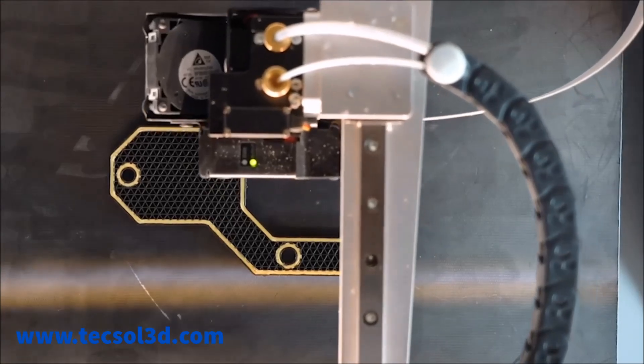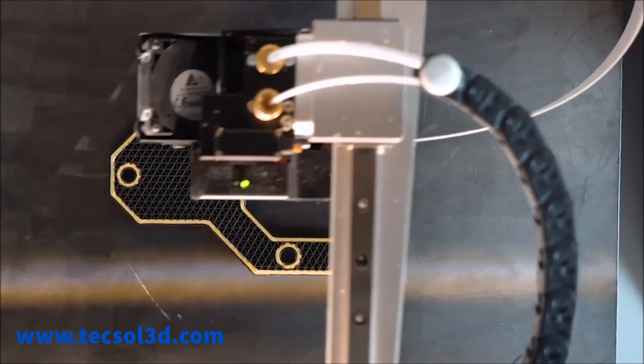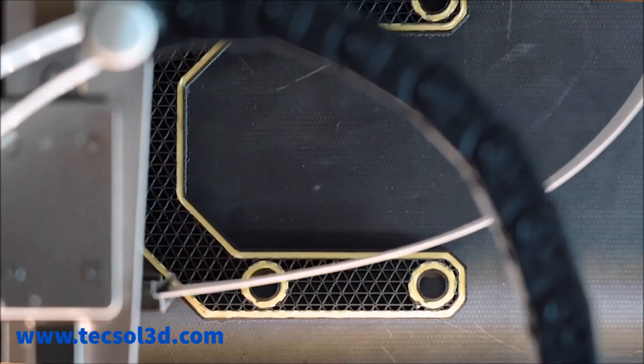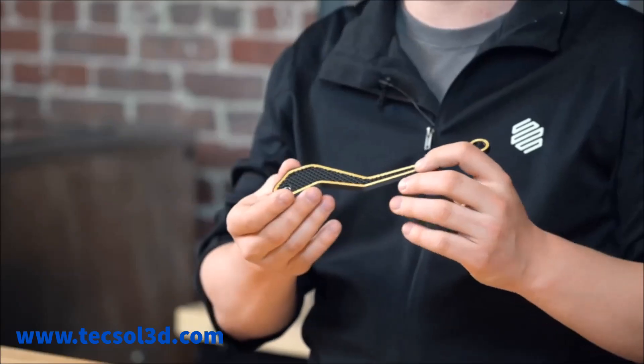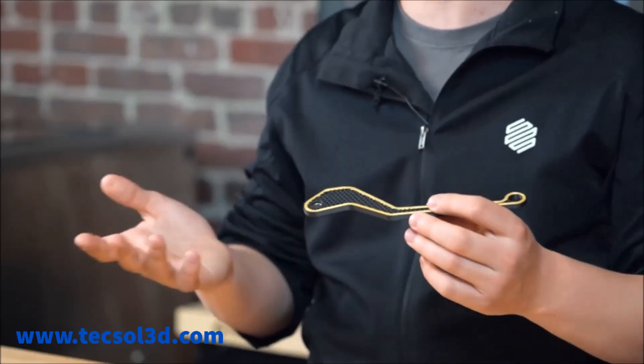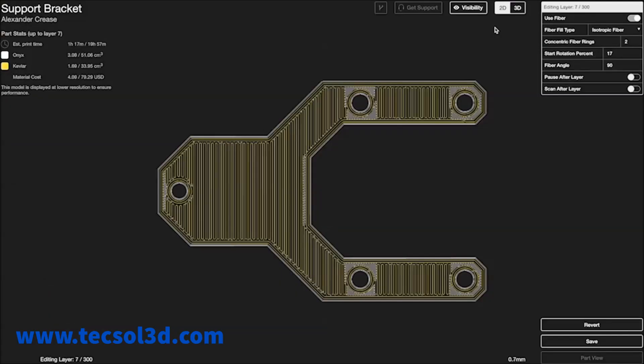Continuous fiber printing is a variant of a deposition-based printing process called continuous fiber fabrication, or CFF. One nozzle builds a thermoplastic matrix material while continuous strands of fiber are ironed down into the part with a second. Software allows you to lay these fibers down in specific places with specific settings to optimize the part for its strength.